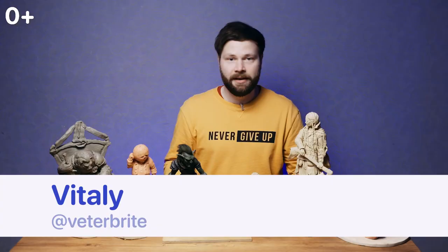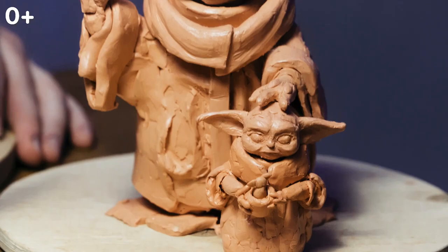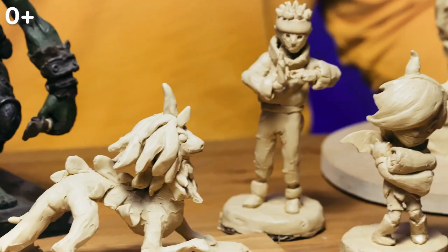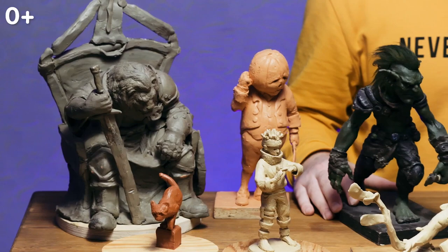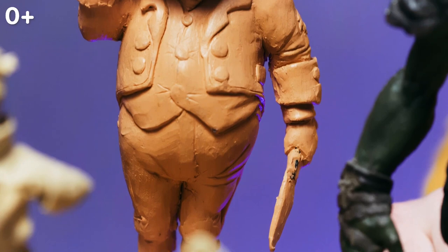Hi, my name is Vitaly. I sculpt characters like this from movies and computer games. Today I'll show you how to make Sisu the dragon from the movie Raya and the Last Dragon. I'll be using sculpting clay. Follow along with me and we'll make this cool character together. Let's get started.